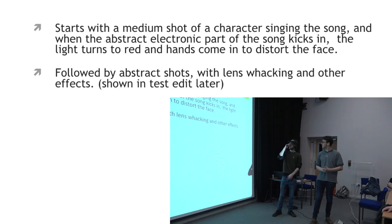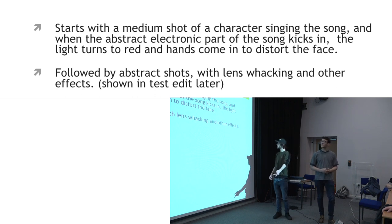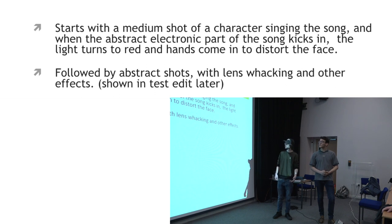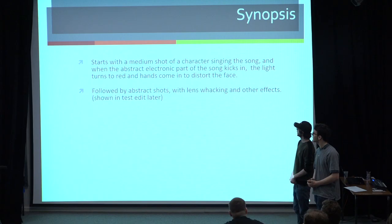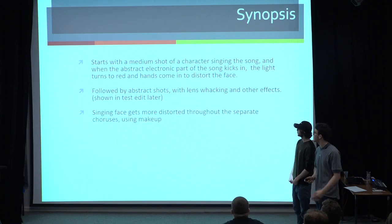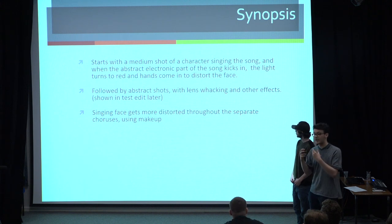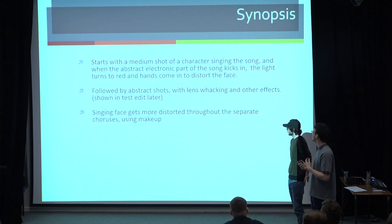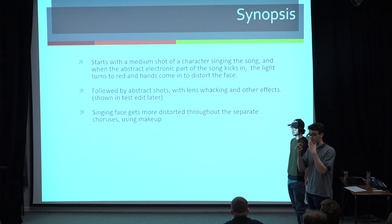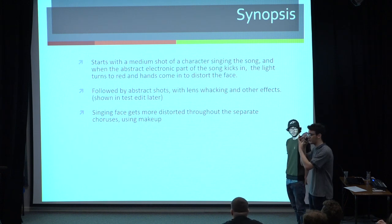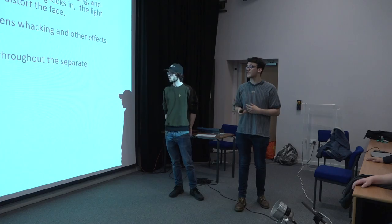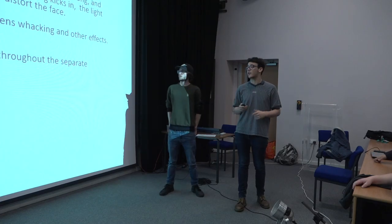The lighting turns to a red or a purple and hands come in and distort the face. That will be followed by abstract shots — we're going to use lens-whacking and different editing techniques to make it look really disorientating and experimental. So throughout the choruses, the singing face gets more distorted with makeup, and maybe painting on extra facial or body parts on the face to make it more distorted throughout the whole song.